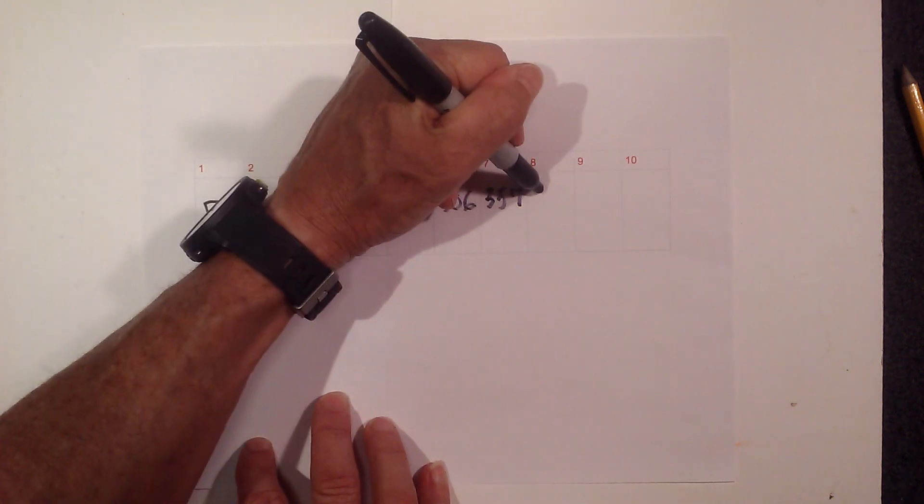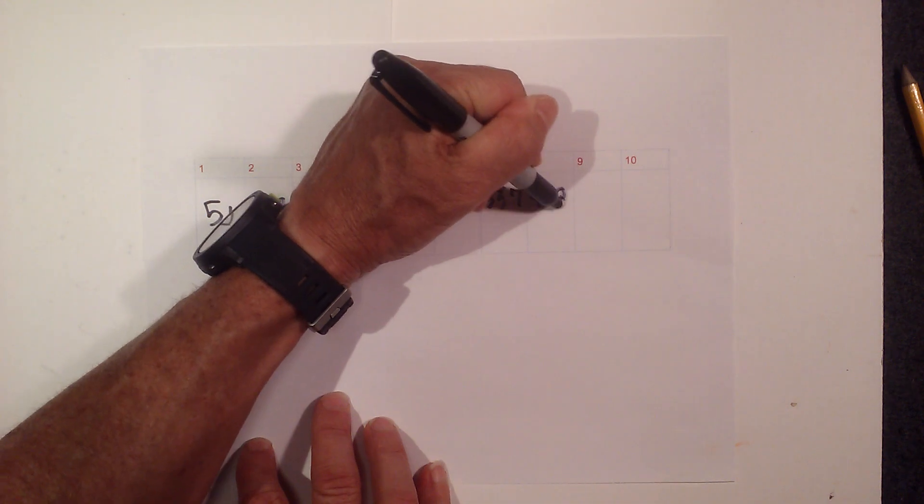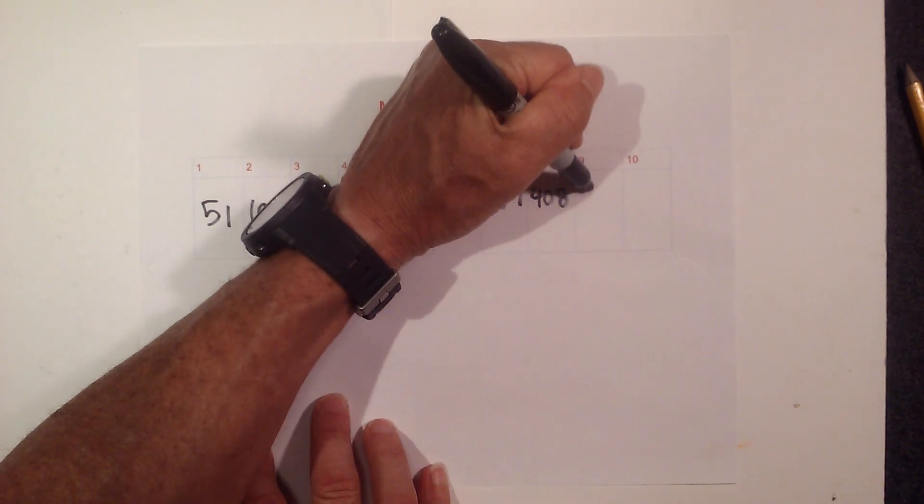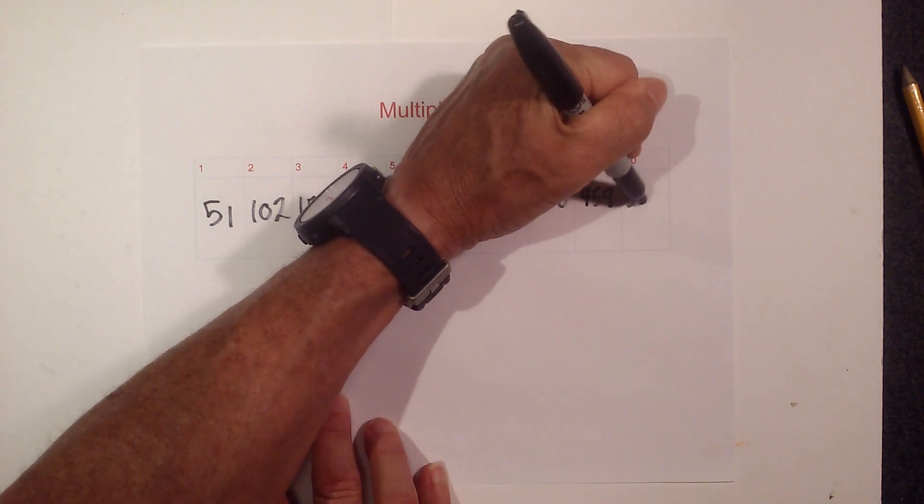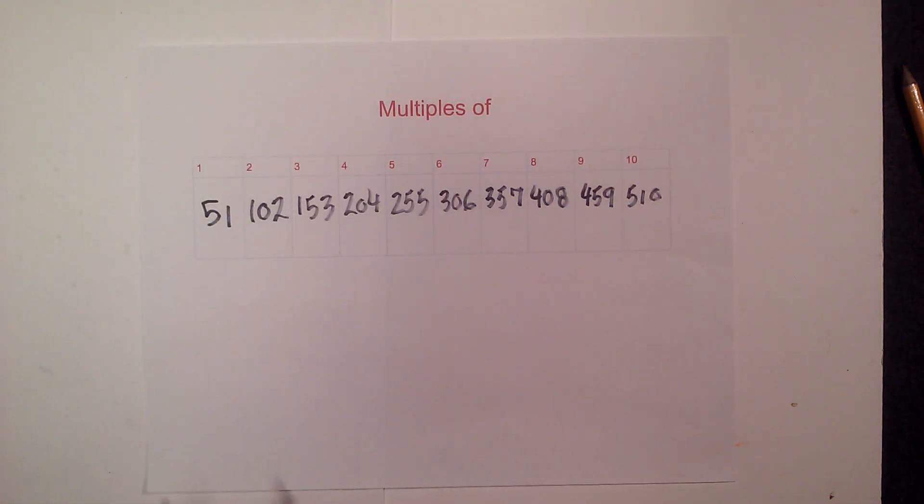Times 8 is 408, times 9 is 459, and then 510. So there are the multiples of 51. Thanks for watching.